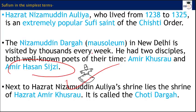Hazrat Nizamuddin Olia is one of the most popular Sufi saints in India. He lived between 1238 and 1325, and his dargah is in Delhi. Many of you may have visited it. It is famous from many films as well — the song 'Kun Faya Kun' from the film Rockstar is based on this dargah.